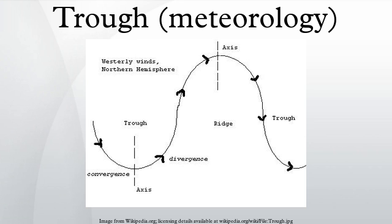In the mid-latitude westerlies, troughs and ridges often alternate, especially when upper-level winds are in a high amplitude pattern. For a trough in the westerlies, the region just west of the trough axis is typically an area of convergent winds and descending air, and hence high pressure, while the region just east of the trough axis is an area of fast, divergent winds and low pressure.